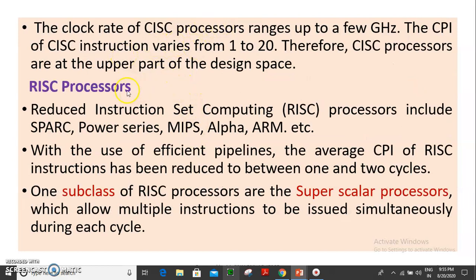RISC stands for Reduced Instruction Set Computer. Examples of RISC processors include SPARC, Power series, MIPS, Alpha, and ARM. One of the main advantages of RISC processors is that the clock cycle count is lower — between one and two cycles per instruction.